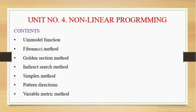This is unit number four, that is non-linear programming. Unit number one was the introduction of optimization technique. Unit number two was linear programming part one, and unit number three is linear programming part two. This is the fourth unit, that is non-linear programming.